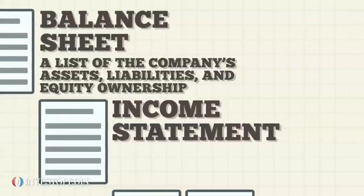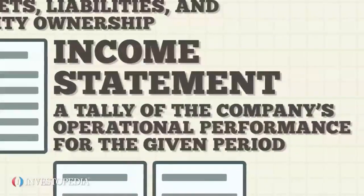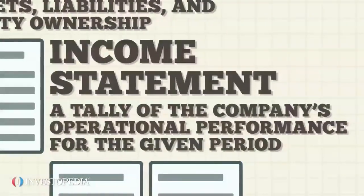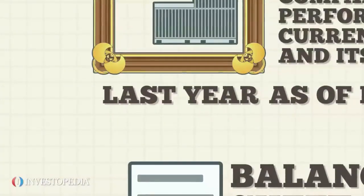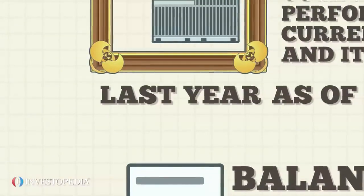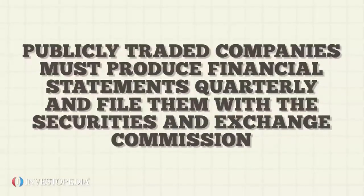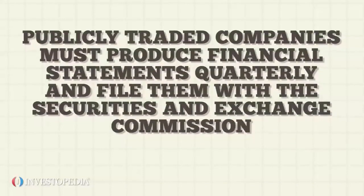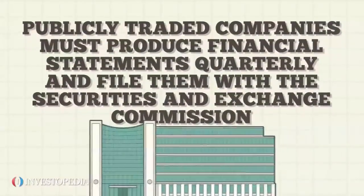The income statement is next and is a tally of the company's operational performance for the given period. The period is stated at the top of the income statement and most often is for a full year. However, publicly traded companies must produce financial statements quarterly and file them with the Securities and Exchange Commission.